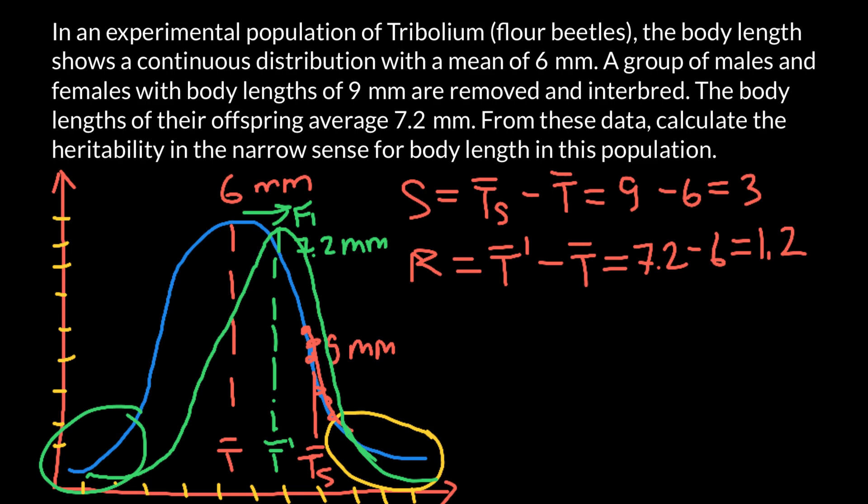And now we have to calculate heritability in the narrow sense. We use h² small square, and the formula would be R divided by S. That means that we have to divide 1.2 by 3, and the answer would be 0.4. This can be an answer on the scale between 0 and 1, or we also can say that this is 40% if you need an answer in percentage form.